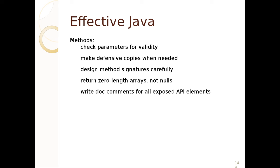For methods, check for parameter validity — you don't know what another programmer did. Check for nulls and make defensive copies when you need them. You should also consider the order of method signatures carefully, as it communicates certain things and can confuse people. If a method returns zero results, return a zero-length array or collection rather than null — you can still ask it its length. If you return null you can't call anything on it, so that's a problem.